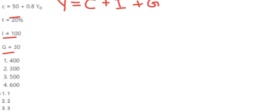Now we know the consumption function is given as 50 plus 0.8 Y_d. Y_d is disposable income. We know that disposable income equals the income minus the tax, that is Y minus tax. The tax rate is 20 percent.